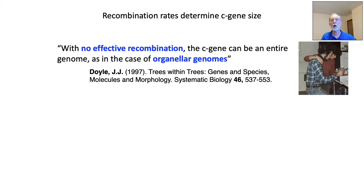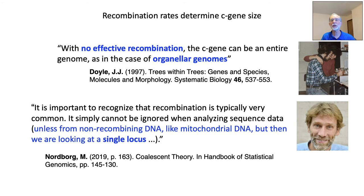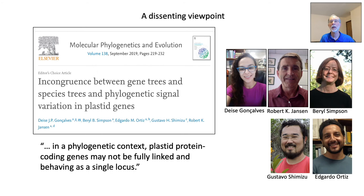This brings me to organelle genomes. It has been widely accepted, as I wrote many years ago, that with no effective recombination, the C gene can be an entire genome, as is the case of organellar genomes. This remains a mainstream assumption in coalescent theory, as seen in this recent quote from Magnus Nordborg that mitochondrial DNA represents a single locus for coalescent purposes.